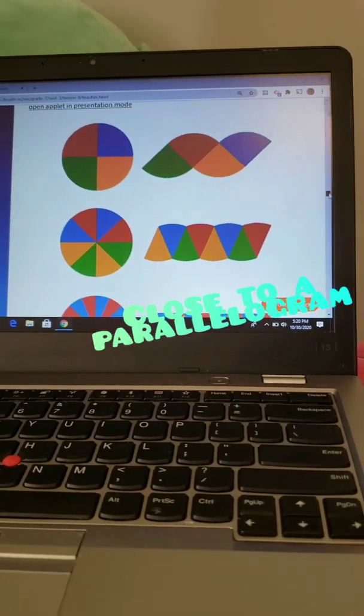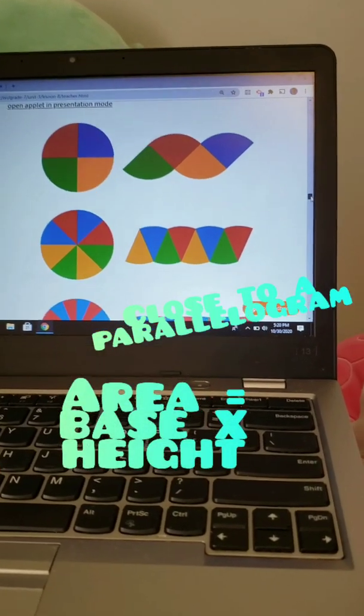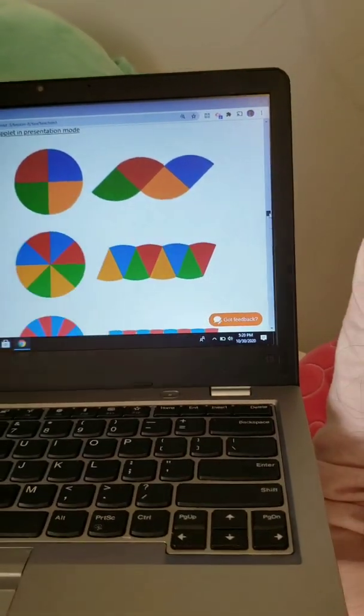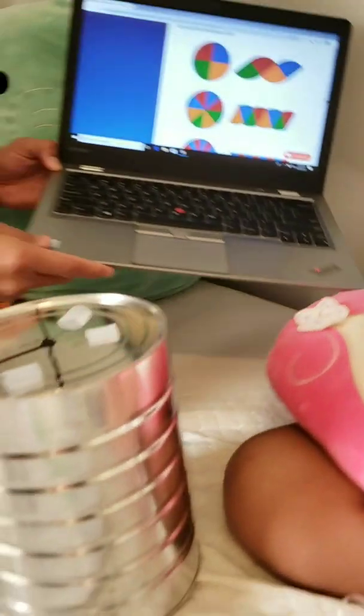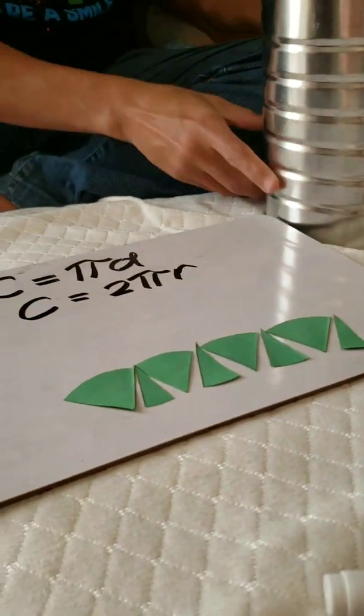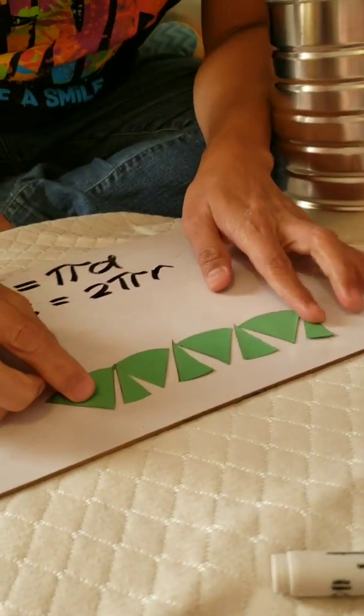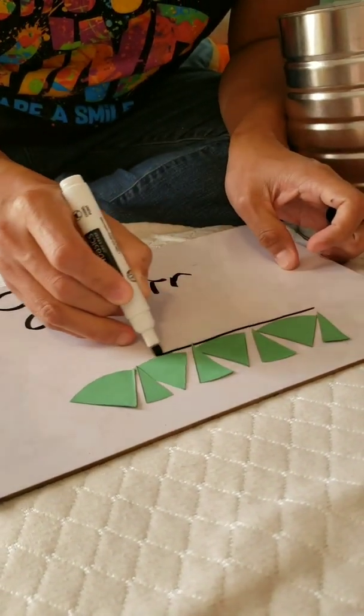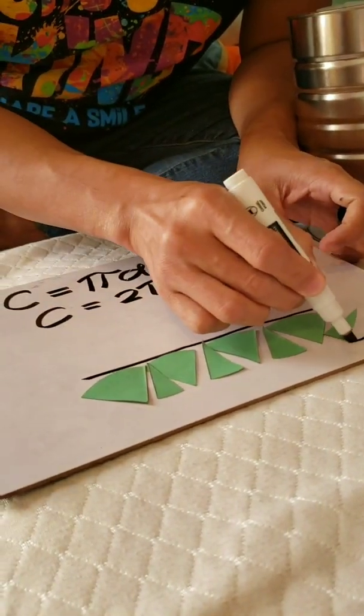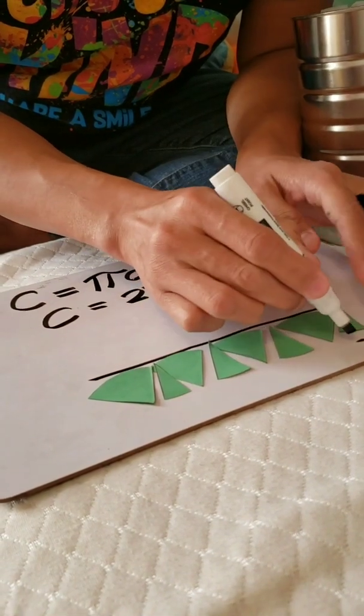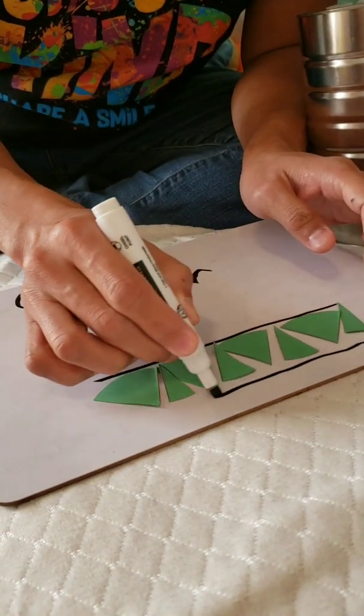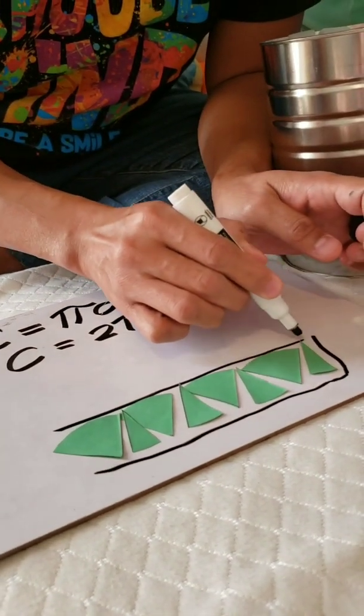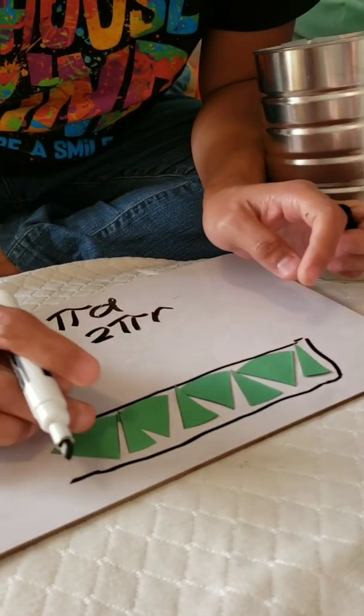So the figure that we form here is a parallelogram. In a parallelogram, we can just say base times height. So this would be the base and this is the height. Let's go back to our cutout circle. So in here, I will draw the base and the other base on top, and the height.